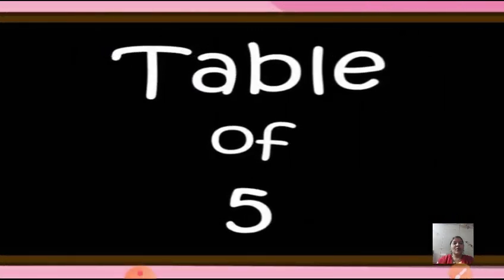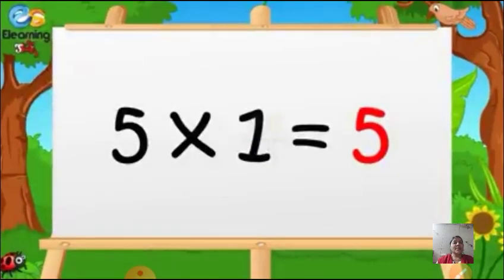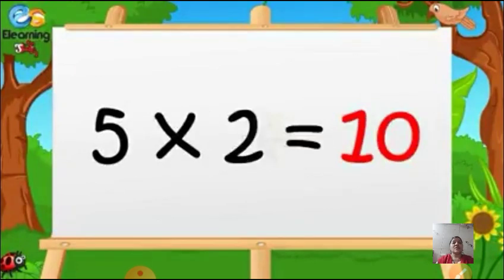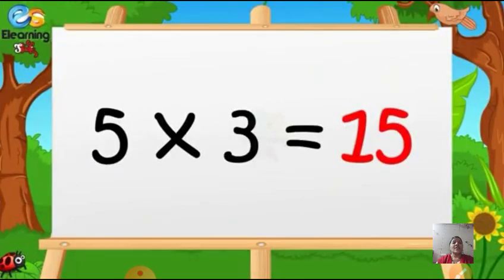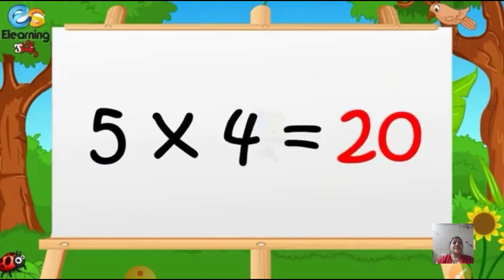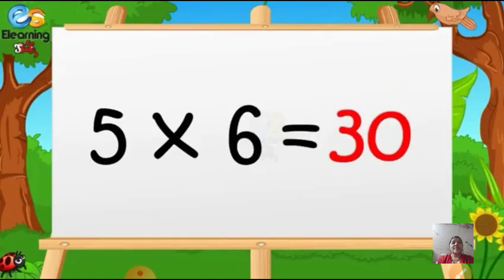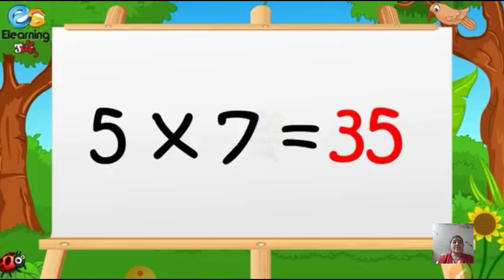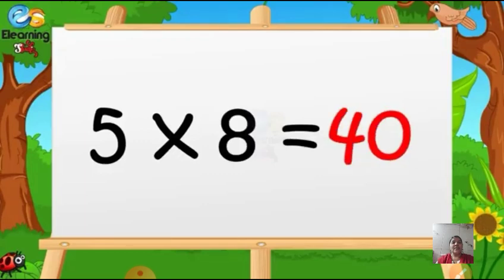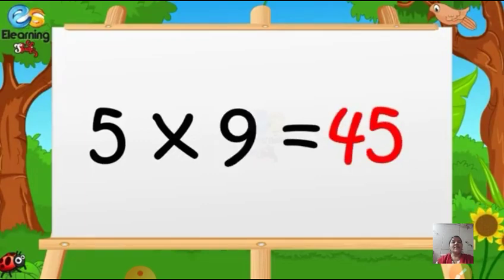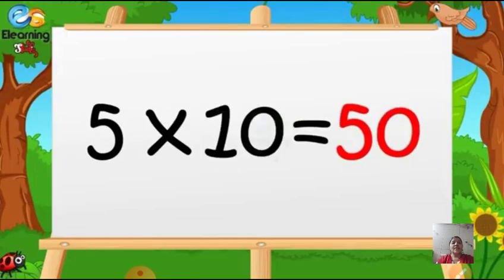I hope you all must have understood what is left and right. Now today we are going to learn the table of five. All can repeat after me: Five ones are five. Five twos are ten. Five threes are fifteen. Five fours are twenty. Five fives are twenty-five. Five sixes are thirty. Five sevens are thirty-five. Five eights are forty. Five nines are forty-five. Five tens are fifty.